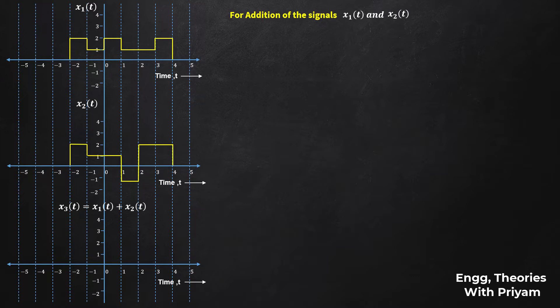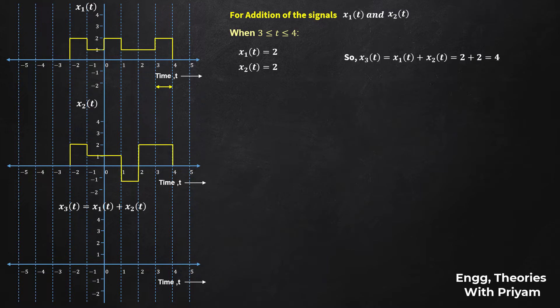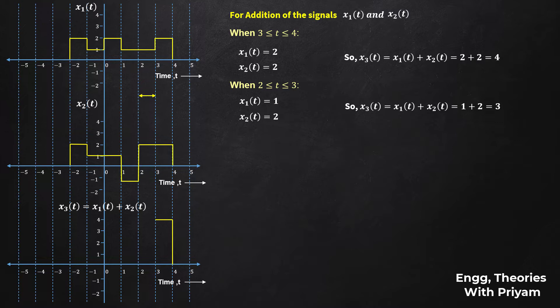For the addition of x1(t) and x2(t), we perform the addition at every instant of time. When t is in [3, 4], x1(t) = 2 and x2(t) = 2, so x3(t) = 2 + 2 = 4. When t is in [2, 3], x1(t) = 1 and x2(t) = 2, so x3(t) = 1 + 2 = 3.